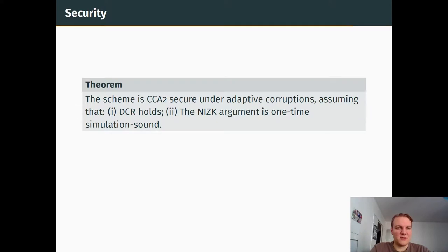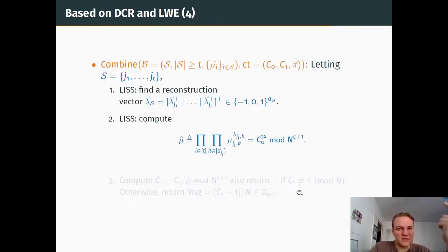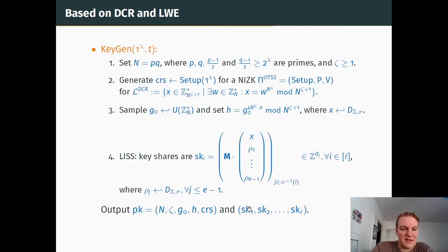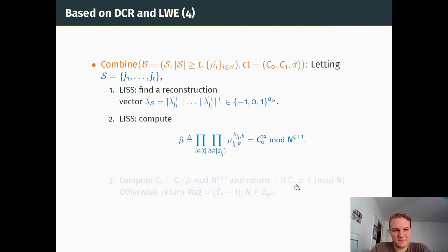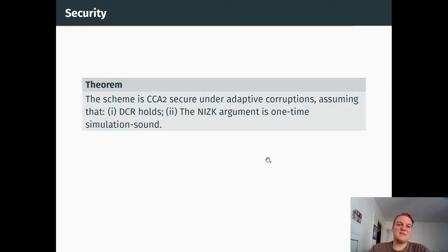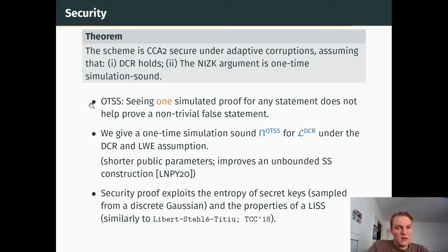This is it for the construction. It's of course correct and compact, because if we take a look at the public key, it's actually independent from the number of servers, and an encryption is also independent from the number of servers. It's then CCA2 secure under adaptive corruptions, under the assumptions that the DCR assumption holds and the NIZK we use is one-time simulation sound.